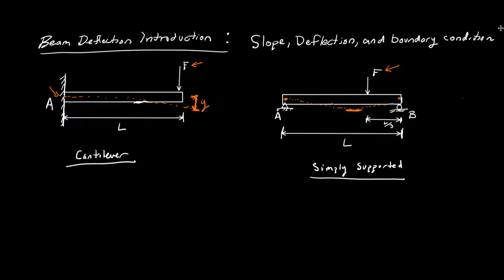These are the two main cases: we have a cantilever and we have a simply supported beam. We will be seeing more complicated stuff, but these are the two main cases you need to know. You might be wondering how you're actually going to solve any of this.